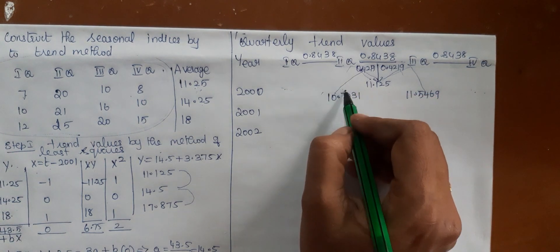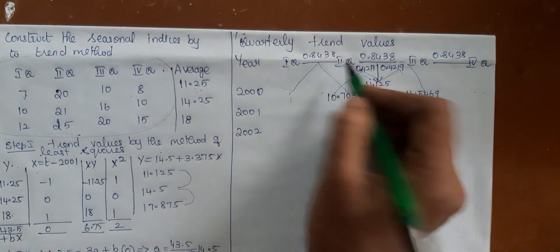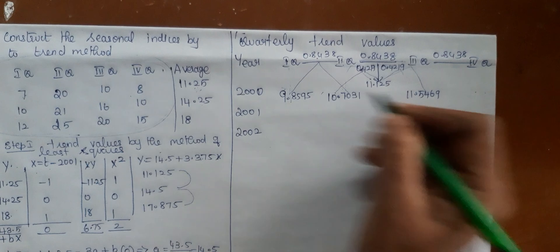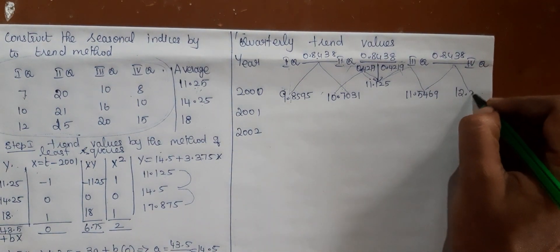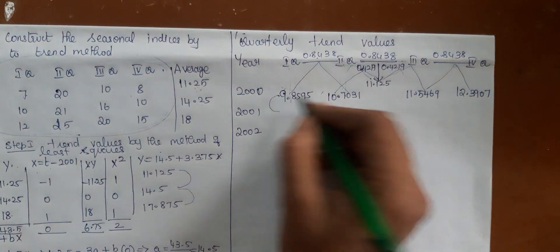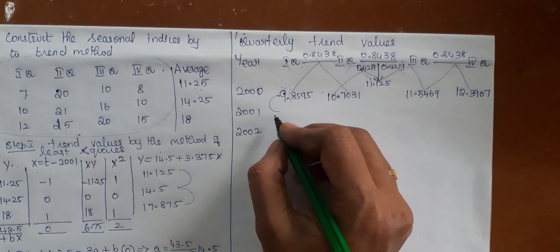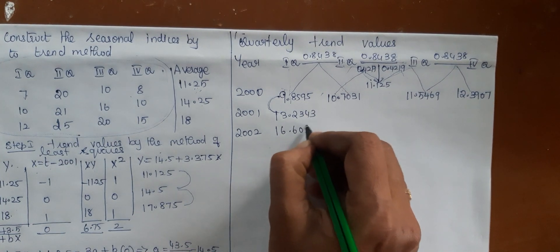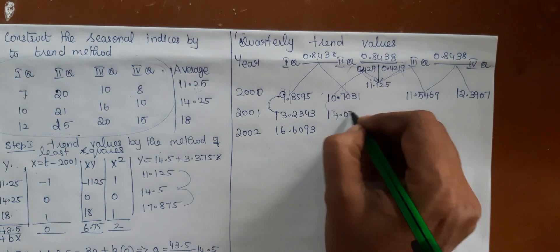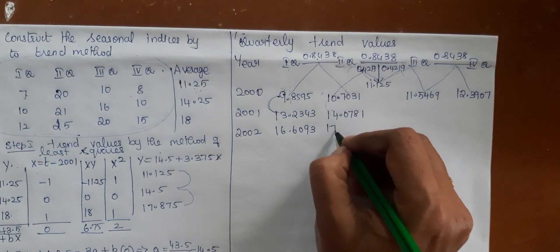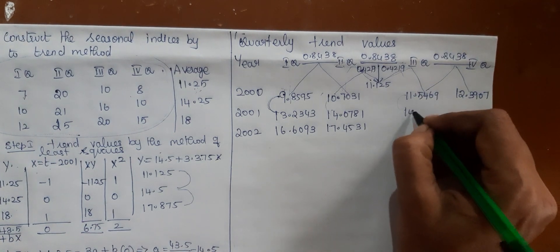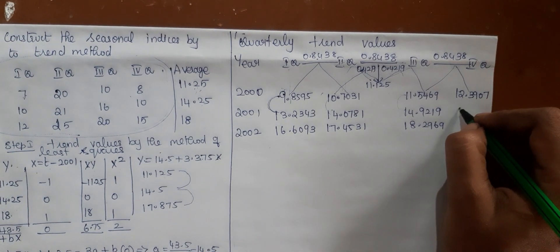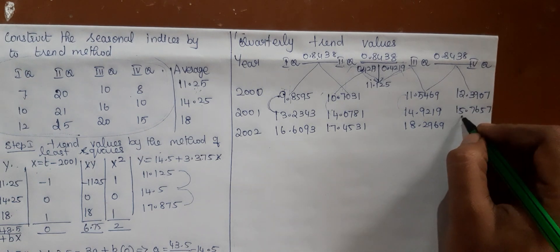11.125 minus 0.4219 gives 10.7031. To get the next lower value, subtract the quarterly increment: 10.7031 minus 0.8438 gives 9.8593. Adding 0.8438 gives 12.3907. For subsequent years, you need not repeat this process — simply add the yearly increment 3.375 to each value. Keep adding 3.375: 12.3907 plus 3.375, plus 3.375, and so on for each successive quarter.